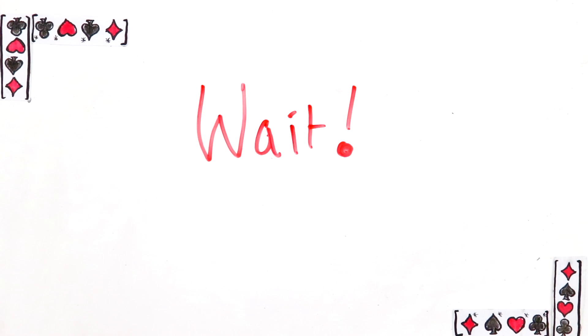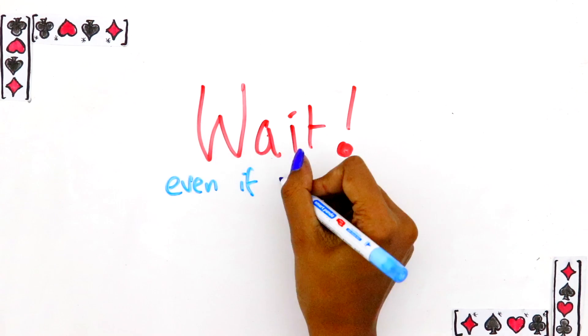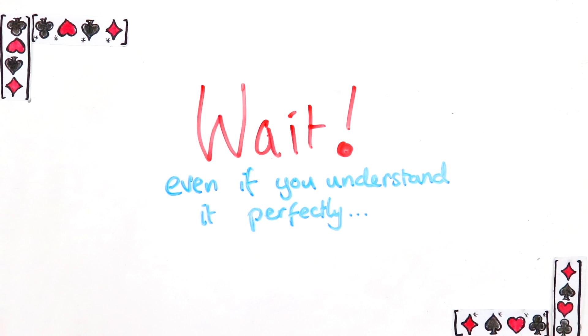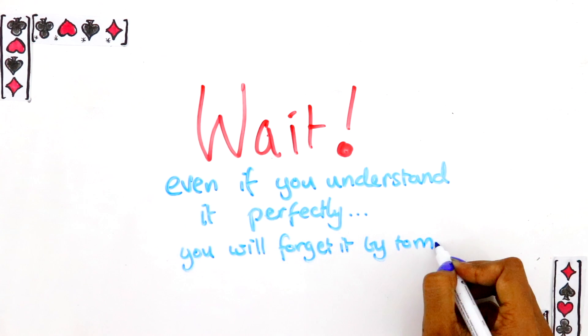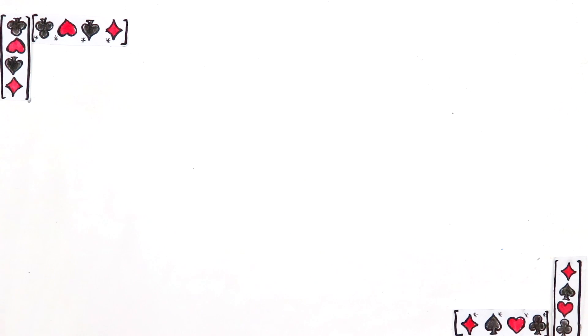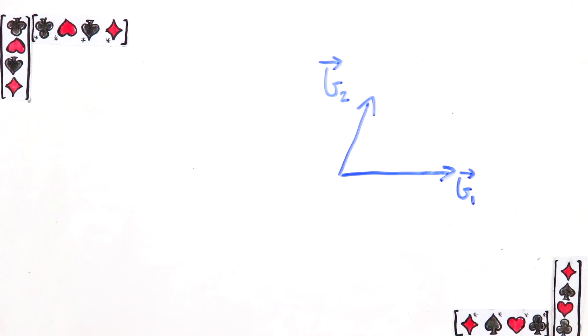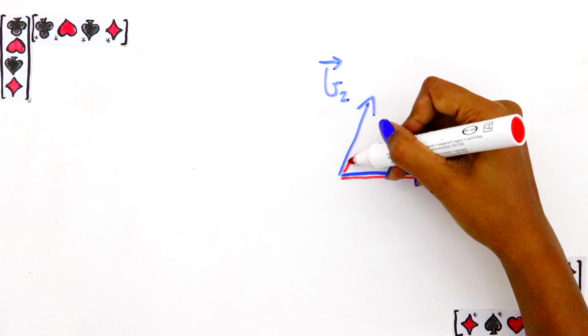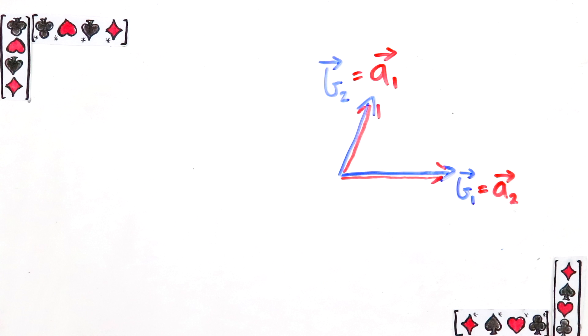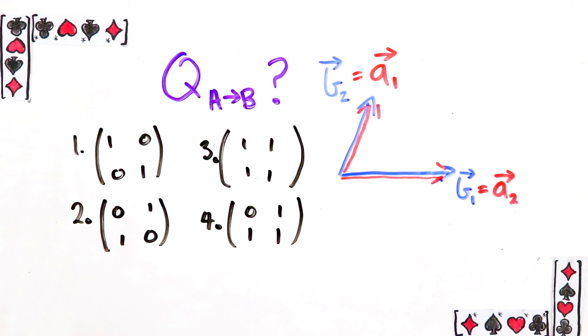But before you go, I'd really recommend you try these two simple multiple choice questions to test whether you really understood this video and to help it stick. Question 1. Suppose that Bob's basis is this and Alice's basis is exactly the same, except she switches which one she calls her first basis vector and which one she calls her second. What is the change of basis matrix? Pick from these options and put your answer in the poll.